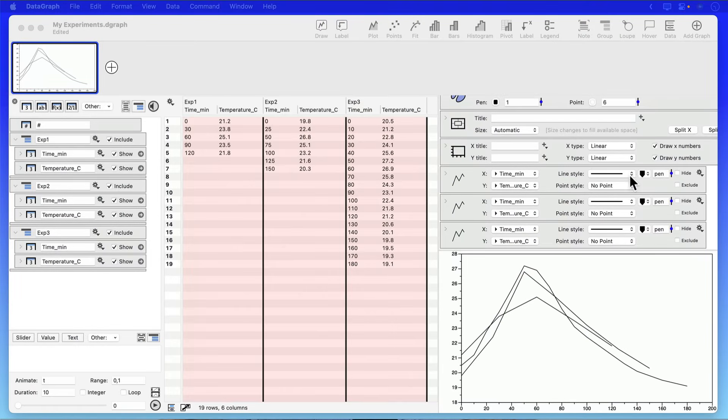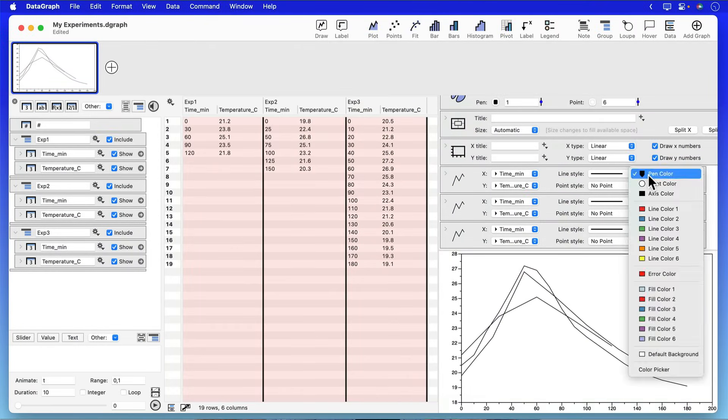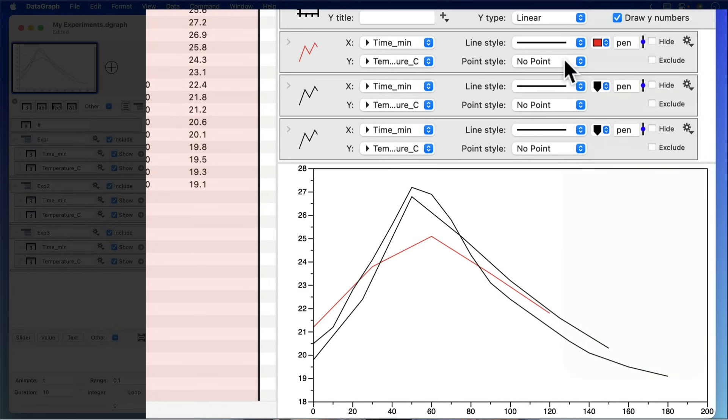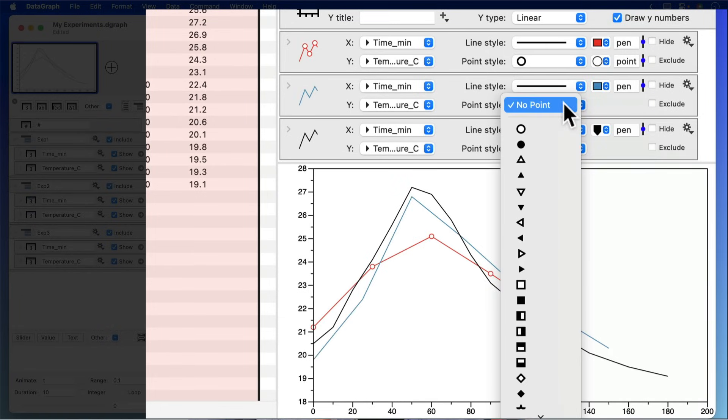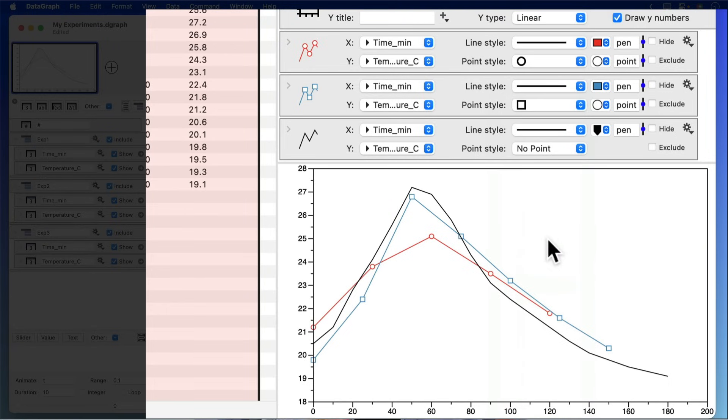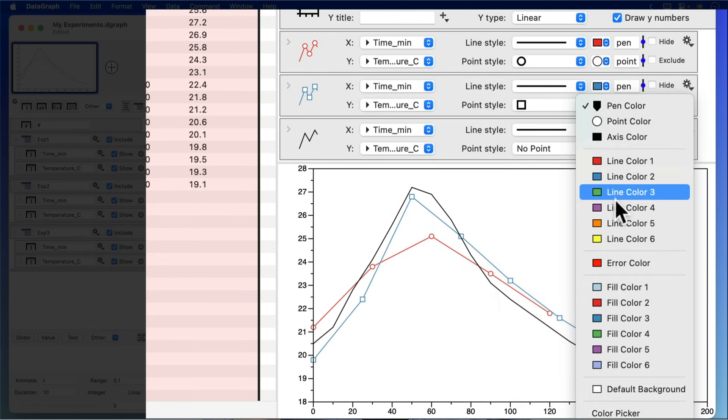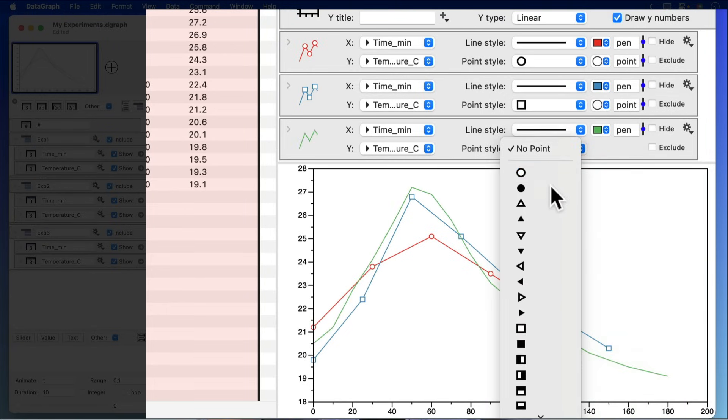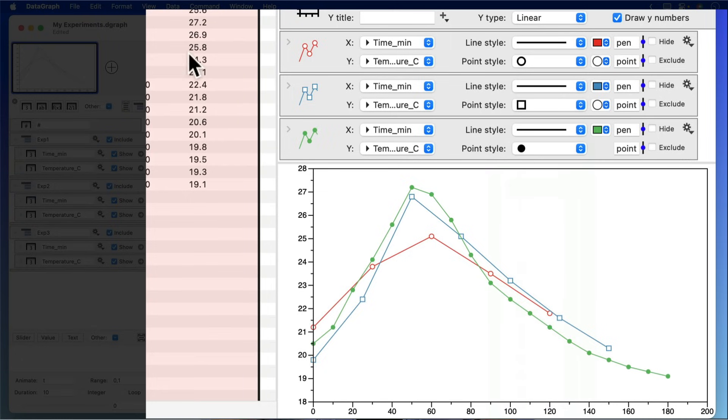The reason that this works in DataGraph is that each command we added is considered an independent layer that's drawn within my graph and I can modify these to change the colors and the symbols to customize them. And when I do that, notice that the icon for each of the commands will also have that same customization so it makes it really easy to track which data goes with which command.